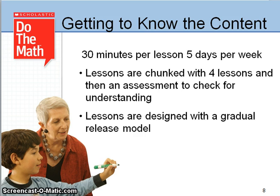If students are unsuccessful when you first get started after four lessons or on the fifth assessment lesson, that might not be the book or module they need to be in. You can re-evaluate the placement of that student then. Don't wait until they're unsuccessful in all 30 lessons.